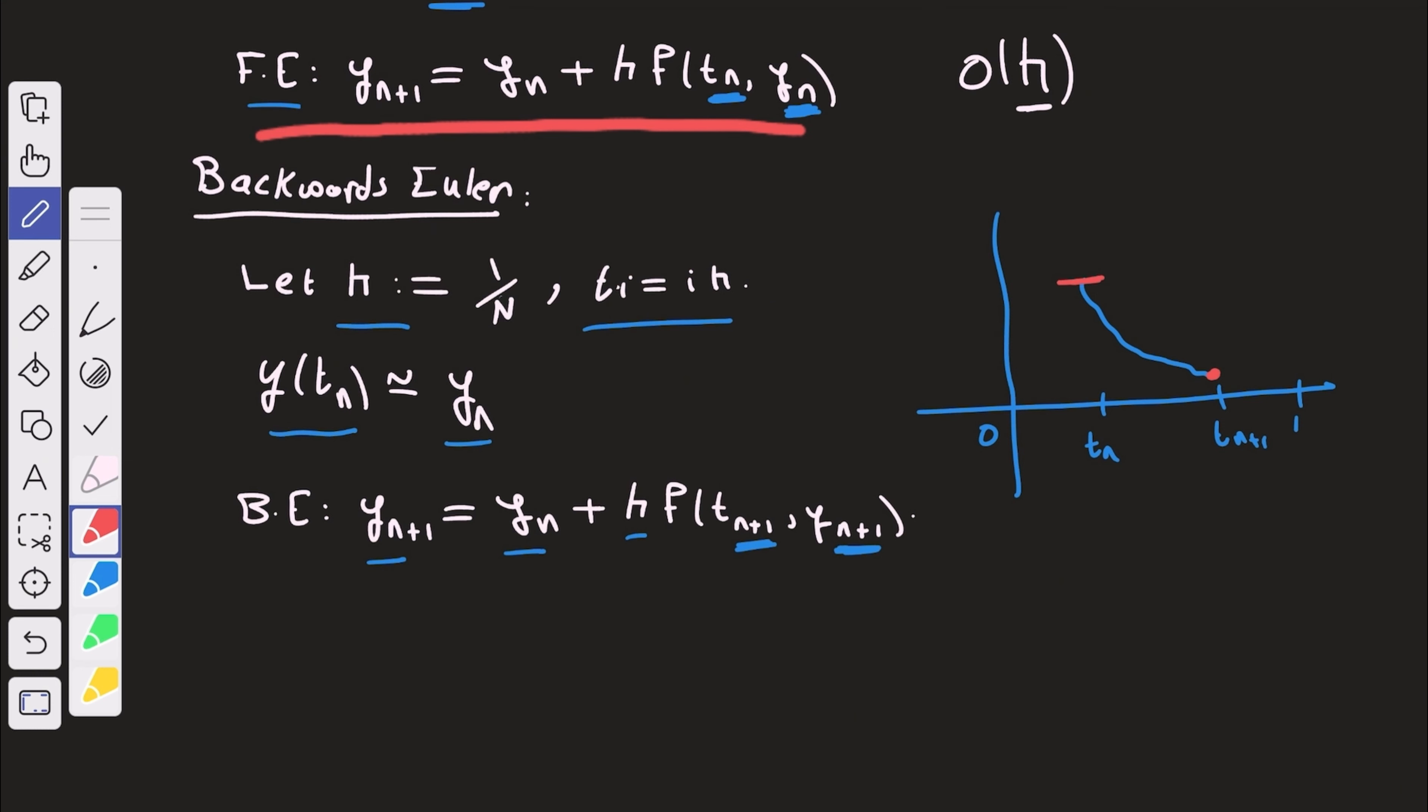So now we're approximating the value of the function by a constant function, which is equal to the value of f at tn plus 1. So if we do that, we get this method. And now you might ask also, is this method converging to the solution, or it's just nonsense?